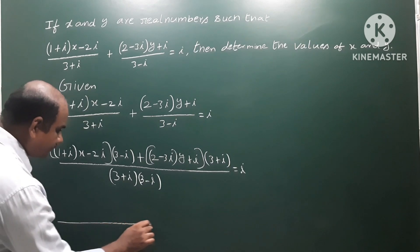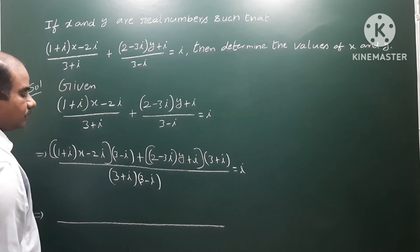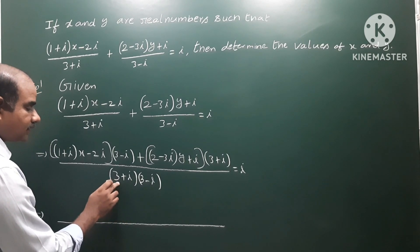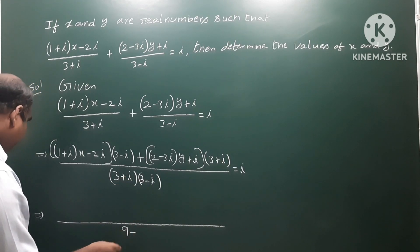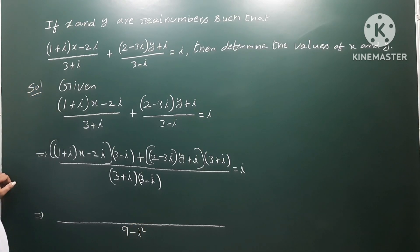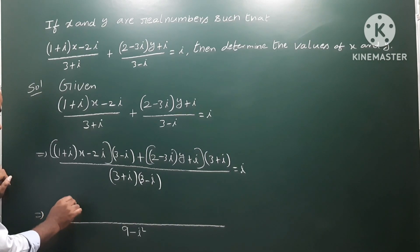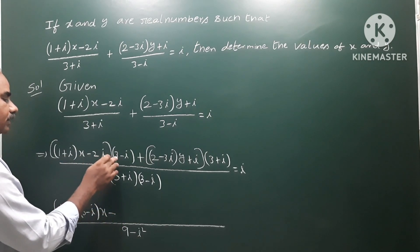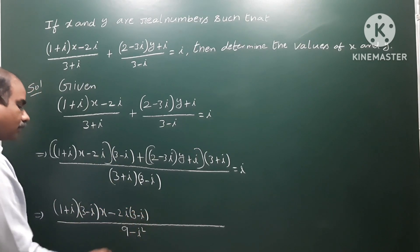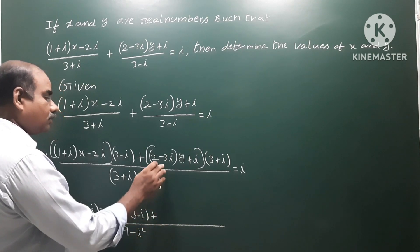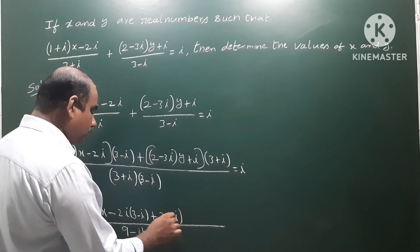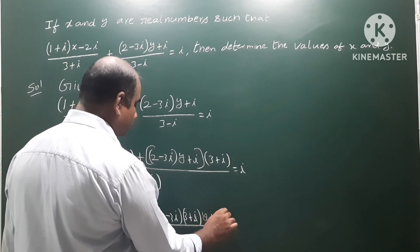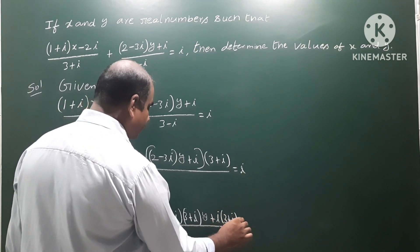The denominator is of the form (a+ib)(a-ib) = a² + b², so (3+i)(3-i) = 9+1 = 10. Now expanding the numerator: (1+i)(3-i)(x-2i) + (2-3i)(3+i)(y+i) = 10i.